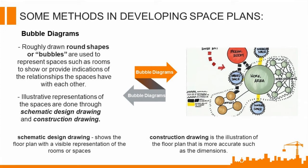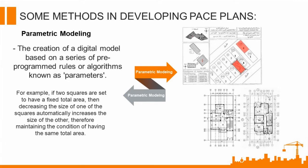Some methods in developing space plans. One method is by the use of bubble diagrams — roughly drawn round shapes or bubbles used to represent spaces such as rooms, to show the relationships the spaces have with each other. The illustrative representations of the spaces are done through schematic design drawing and construction drawing. In schematic design drawing, it shows the floor plan with a visible representation of the rooms or spaces. Whereas the construction drawing is the illustration of the floor plan that is more accurate, such as having dimensions.